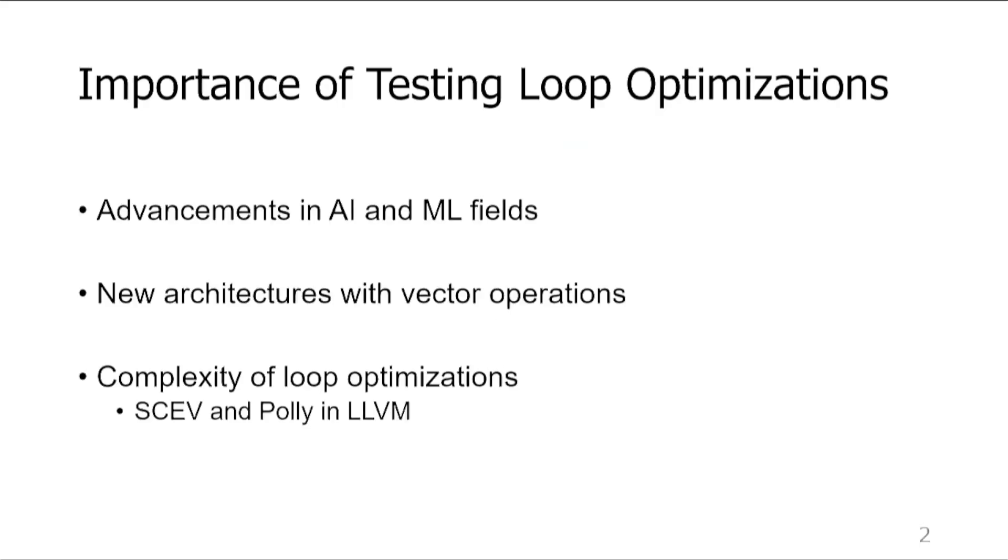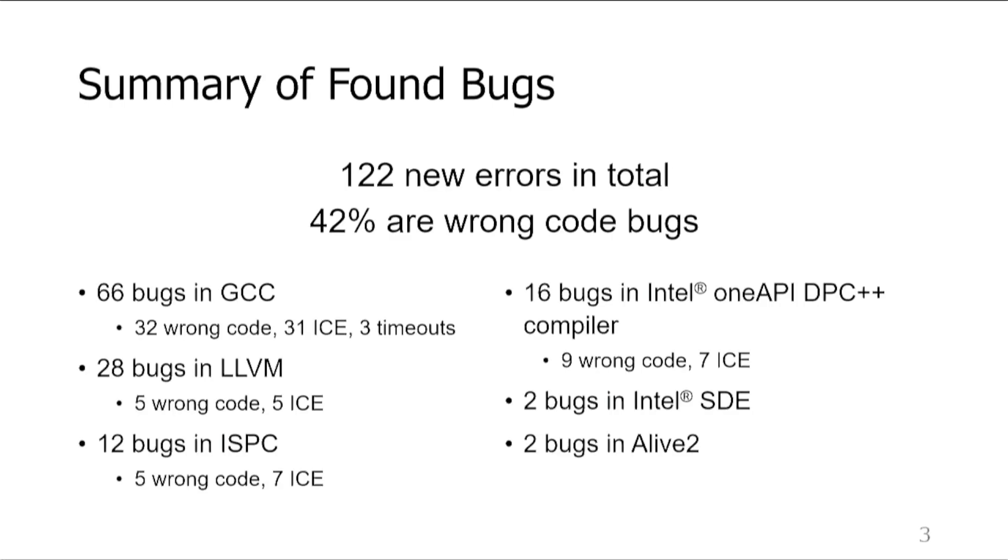One might ask why we focus on testing loop optimizations. New loop optimizations inspired by recent advancement in AI and ML fields and new architectures with vector operation support increase compilers complexity. Unfortunately, conventional testing methods are not able to keep up with it and often miss bugs. That is why we developed a new version of a generative compiler fuzzer called YarpGen. Using it, we were able to detect 122 previously unknown errors in GCC, LLVM, ISPC, DPC++, SDE, and Alive2. These errors are unrelated to the bugs that we reported in our OOPSLA 2020 paper. 42% of them were miscompilations.